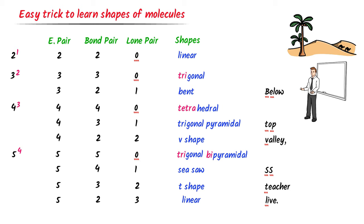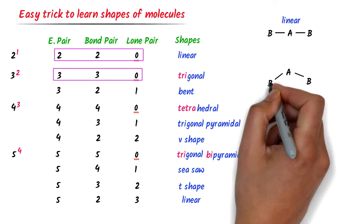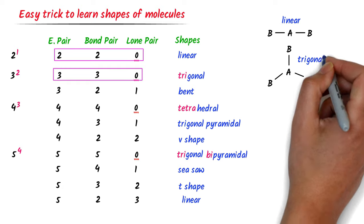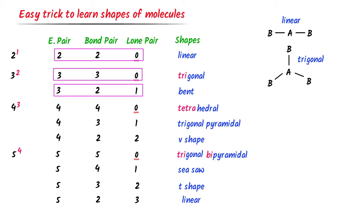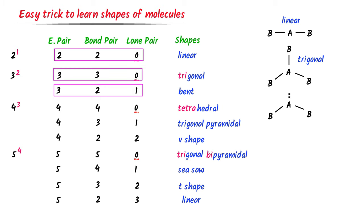Using this simple trick, we can easily memorize the shape of molecules. Let me show how to apply this trick. First case: central atom A with two bond pairs and zero lone pairs — its shape is linear. Second case: central atom A with three bond pairs and zero lone pairs — its shape is trigonal. Third case: central atom A with one lone pair and two bond pairs — I always draw the lone pair first, then the bond pairs — its shape is bent.